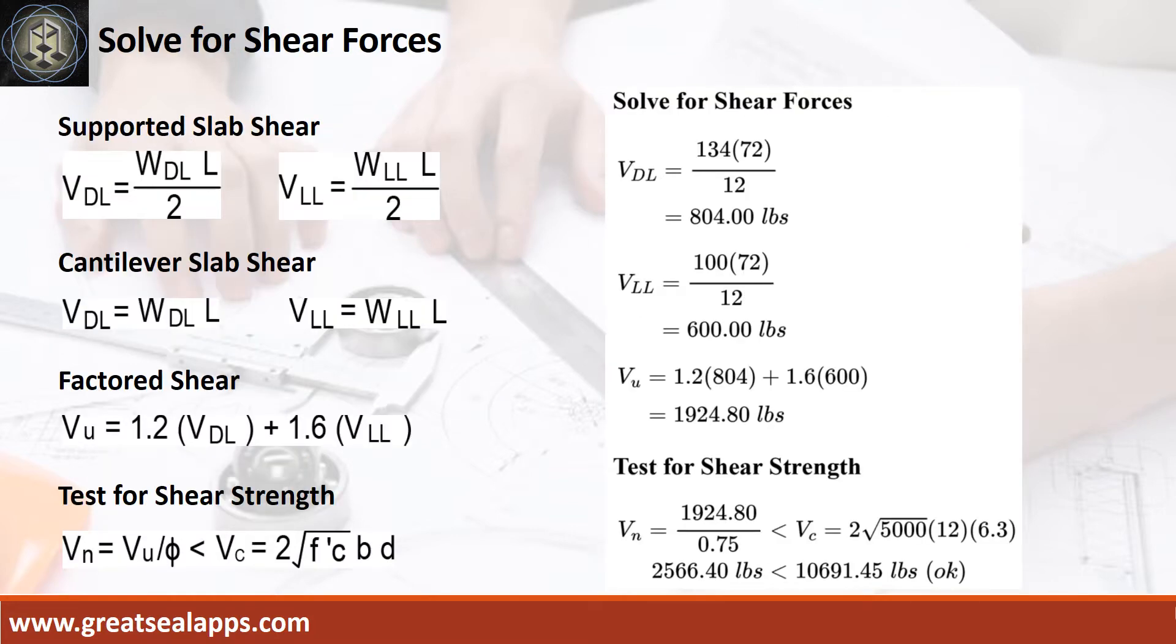The shear force for dead load is 804 pounds. The shear force for live load is 600 pounds, for a maximum shear force of 1,924.8 pounds. The nominal shear force is 2,566.4 pounds less than 10,691.45 pounds.